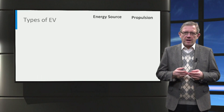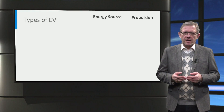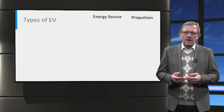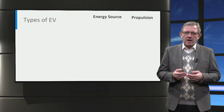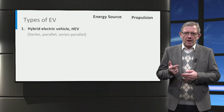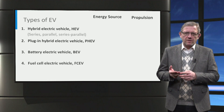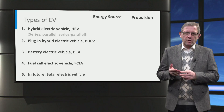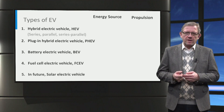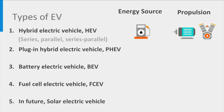Battery electric vehicles have an electrified drivetrain that can be classified based on their energy sources, their propulsion devices, and how their propulsion devices are hybridized. In general we have hybrid electric vehicle, plug-in hybrid electric vehicle, battery electric vehicle, fuel cell electric vehicle and in the future solar electric vehicle. The hybrid electric vehicle sources its energy solely from gasoline or diesel, while it uses both the electric motor in combination with the battery and a combustion engine for propulsion.